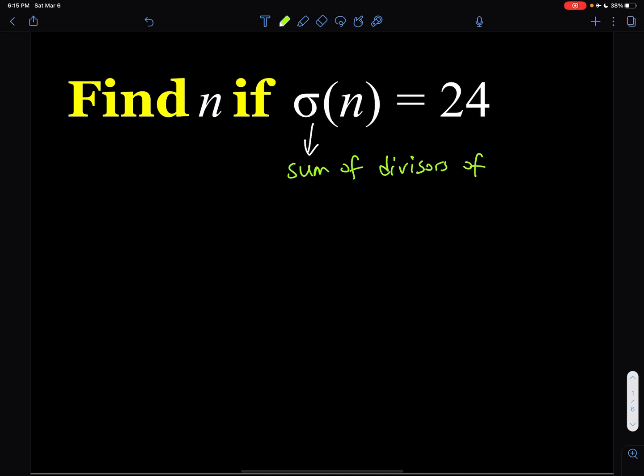Now, we're basically going to be doing some reverse engineering here. Why? Because we're not given n, we have to find it, but we're given the sigma of n. So how do you do this? Let's go ahead and talk a little bit about sigma.